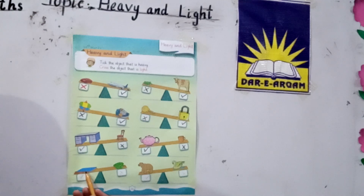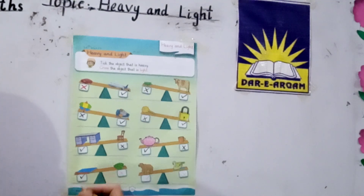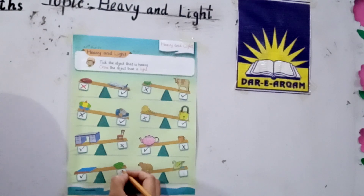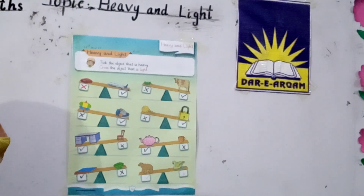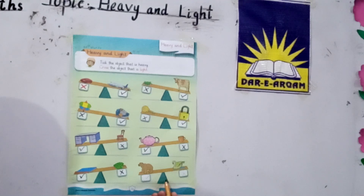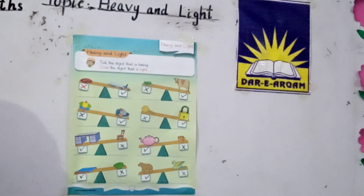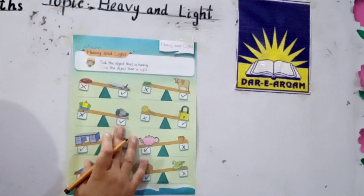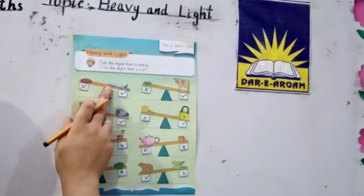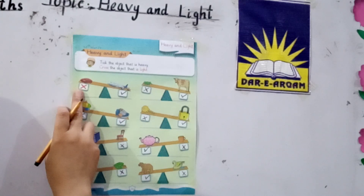Object. This is heavy, and this one is light — so we cross it. In this set, we tick the heavy object and cross the light object. Like this. Okay students, hurry up, complete it. My dear students, in this page we have cleared the concept of heavy and light. We tick the heavy object and cross the light object.